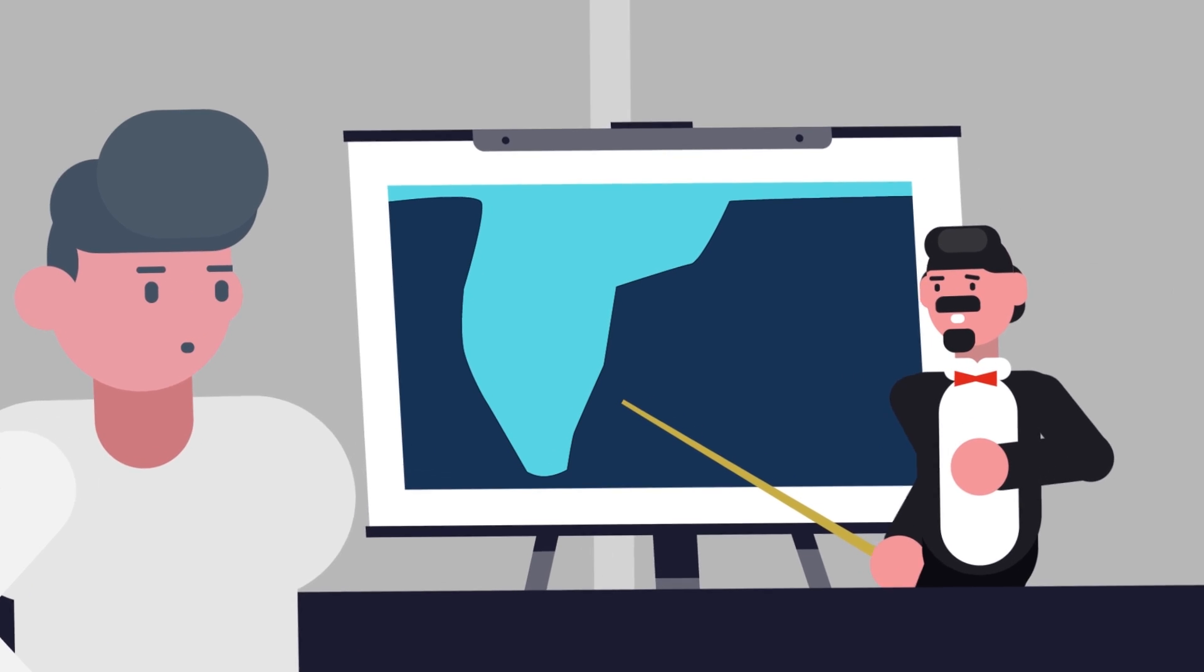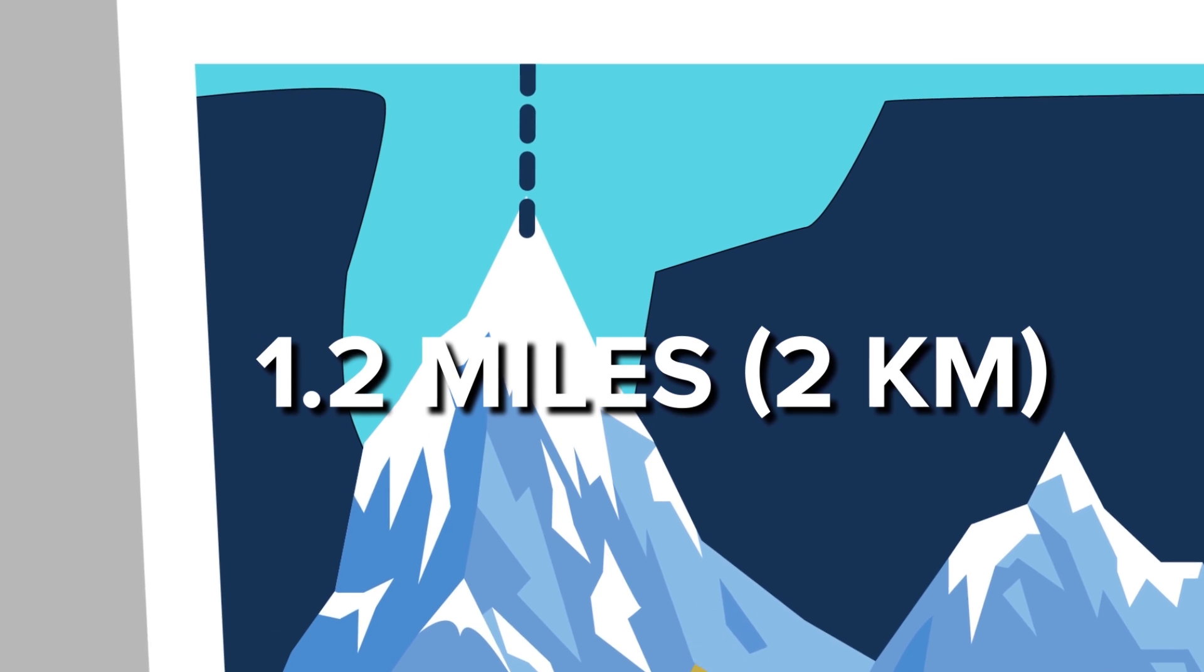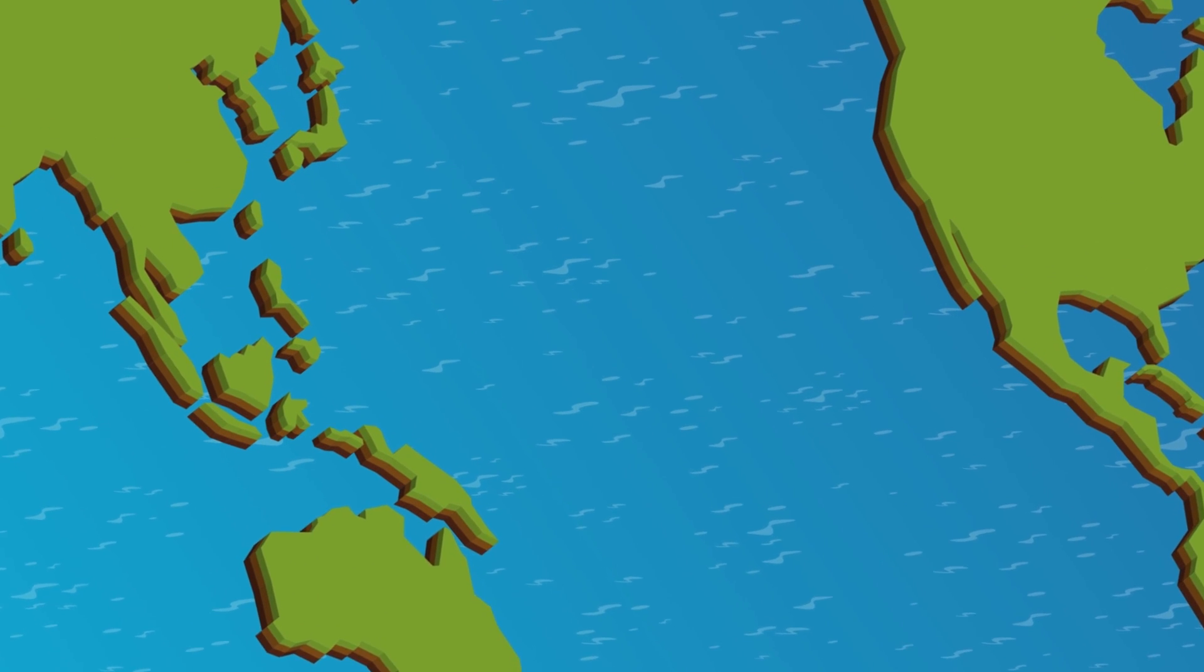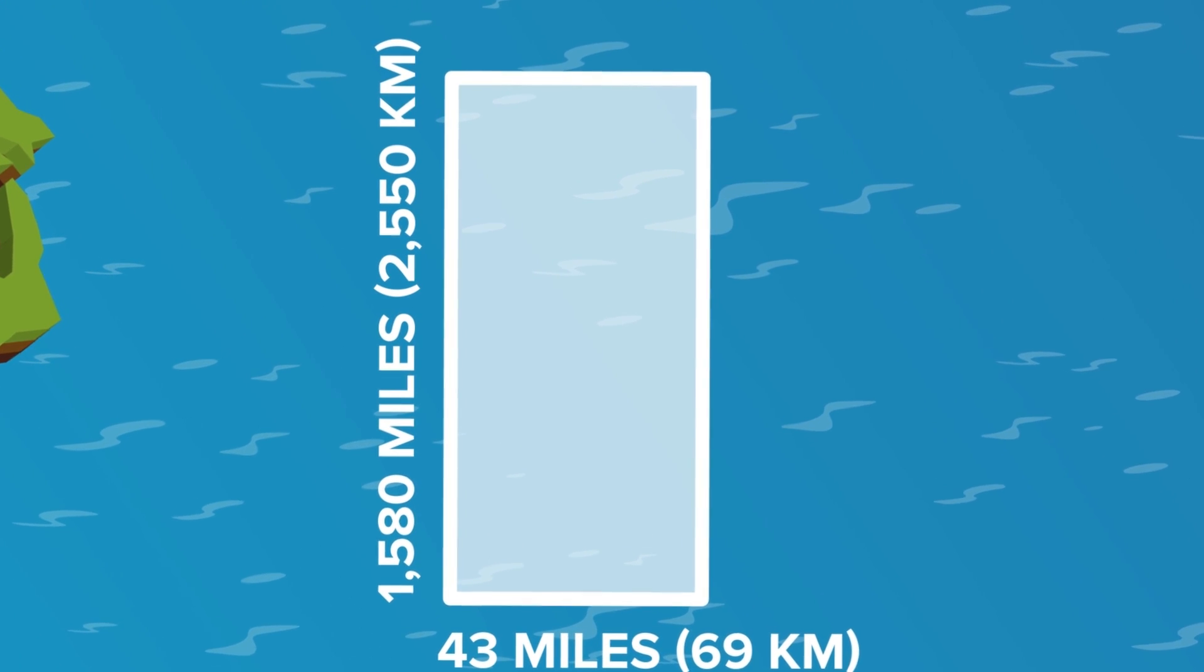The trench is so deep in fact that if you were to put Mount Everest inside it there would still be 1.2 miles of water above it. And if you're worried about living space, well the trench is 1,580 miles long and 43 miles wide, so there's plenty of elbow room to go around.